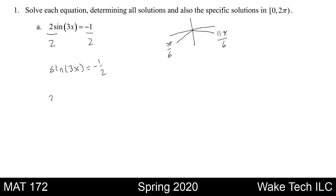That means we have 3x equal to 7 pi over 6 and 11 pi over 6. In order to generalize these solutions, we will write plus 2 pi k on both.